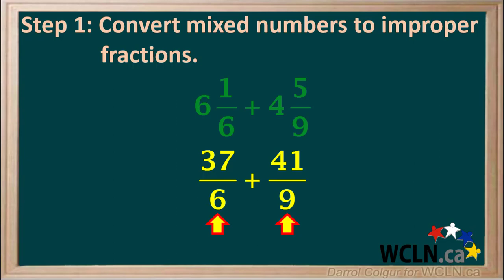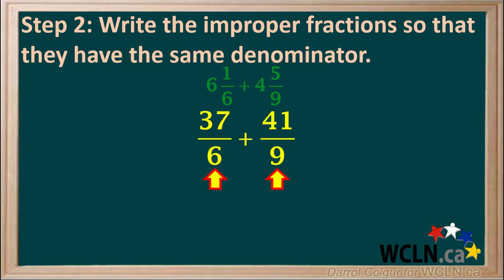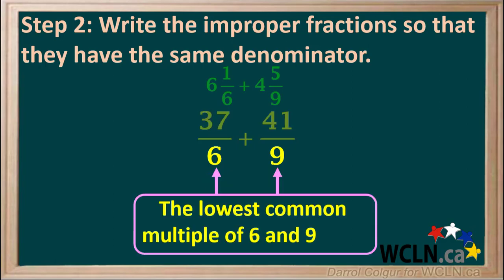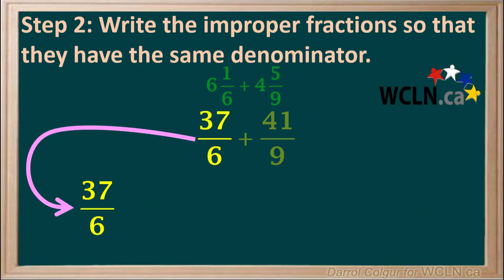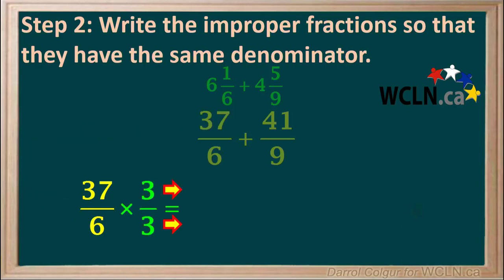Remember, when adding fractions they must have the same denominator. So our job now is to write these fractions with the same denominator. To find it, we need the lowest common multiple of 6 and 9, which is 18. So we need to write both fractions with a denominator of 18. Starting with 37 over 6, we multiply both the numerator and denominator by 3, giving us 111 over 18.